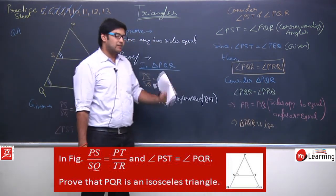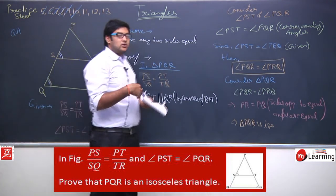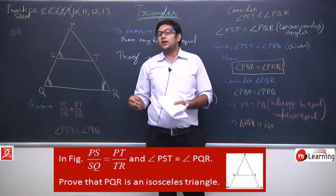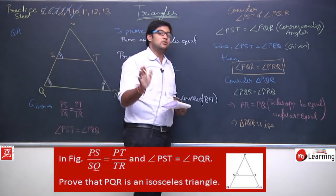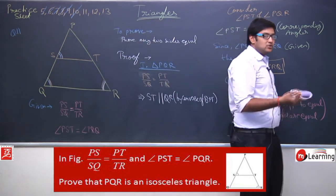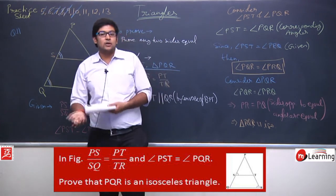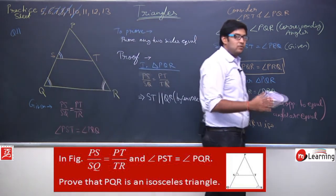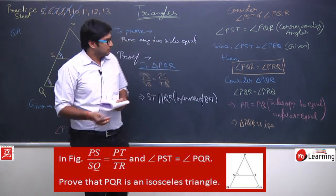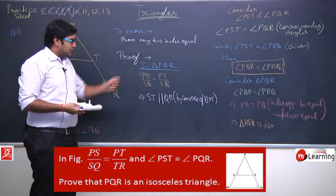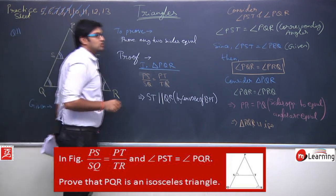Since PR = PQ, two sides of triangle PQR are equal, which implies that triangle PQR is an isosceles triangle. Hence proved. This question also uses the concept of corresponding angles from previous classes. Geometry concepts repeat across classes, so similarity of triangles will appear again. Question number 11 is complete.